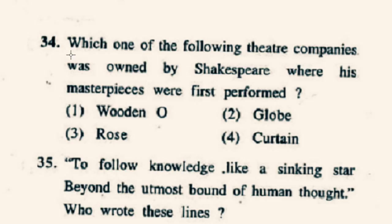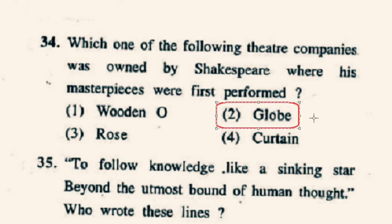Question number 34: Which theatre company was owned by Shakespeare where his masterpieces were first performed? The correct option is 2nd: the Globe Theatre in London, associated with William Shakespeare. It was built in 1599 by Shakespeare's playing company, Lord Chamberlain's Men. It was destroyed by fire on 29th June 1613. A second Globe Theatre was built on the same site by June 1614 and closed by an ordinance in September 1642.